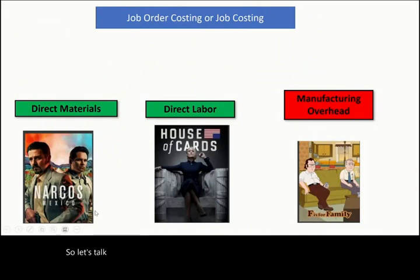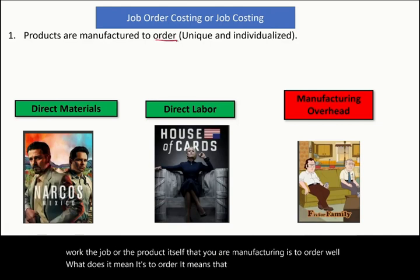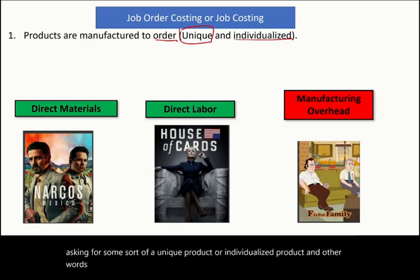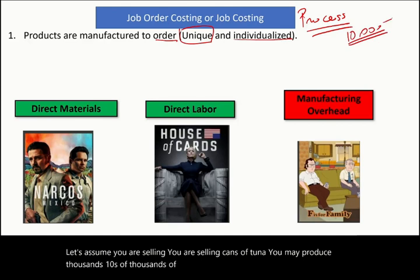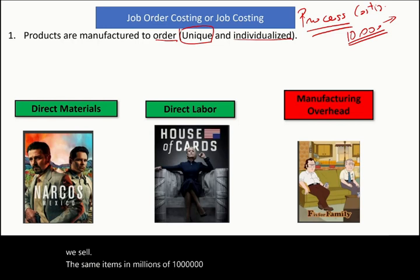Let's talk about job order costing, or simply job costing. In this type of work, the job or the product you are manufacturing is made to order. What does that mean? It means the customer is asking for some sort of unique or individualized product. In other words, you are not manufacturing in a process fashion. Process costing is when you sell the same items in millions of quantities — like cans of tuna. But that's not the case here. Products are individualized and unique.